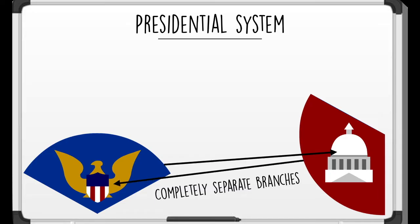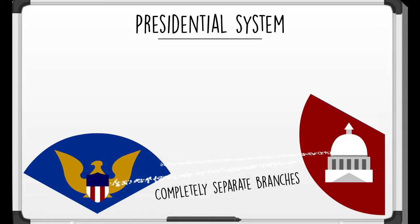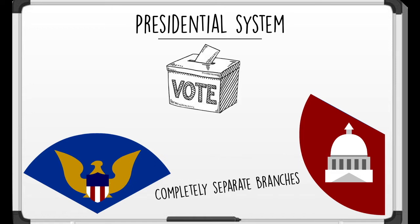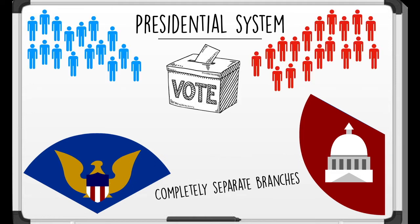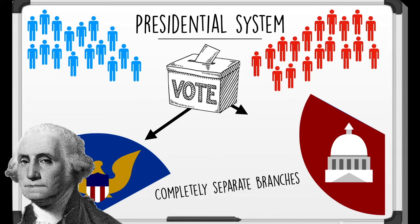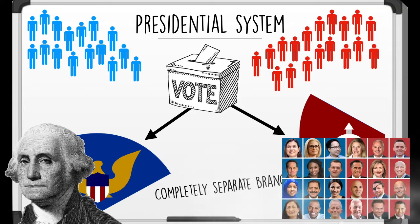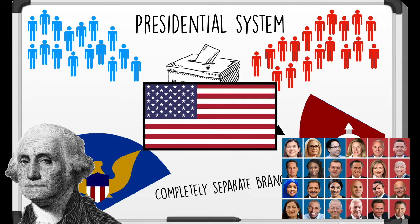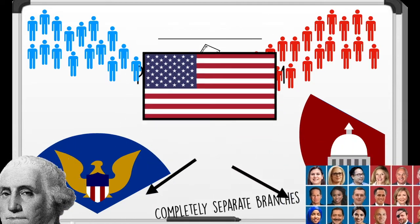Now when it comes time to vote, the people get to cast their vote for both the executive branch and legislative branch members. And it probably seems pretty normal to you, because if you're from America, that's the way that we do it.